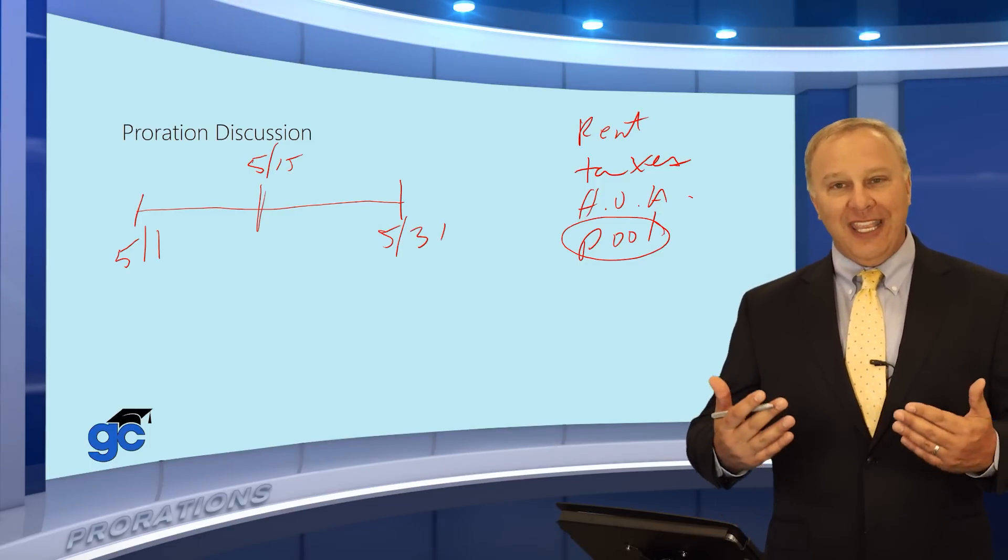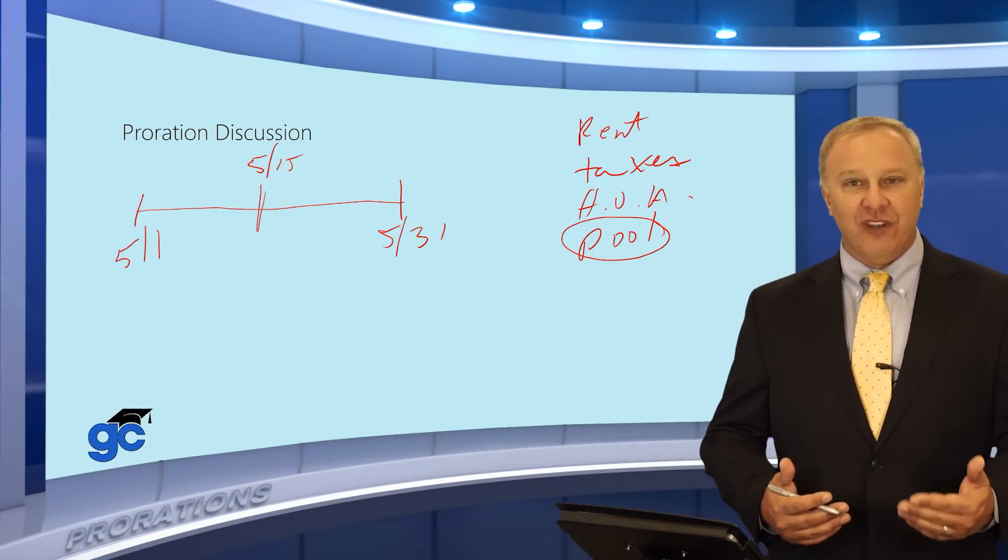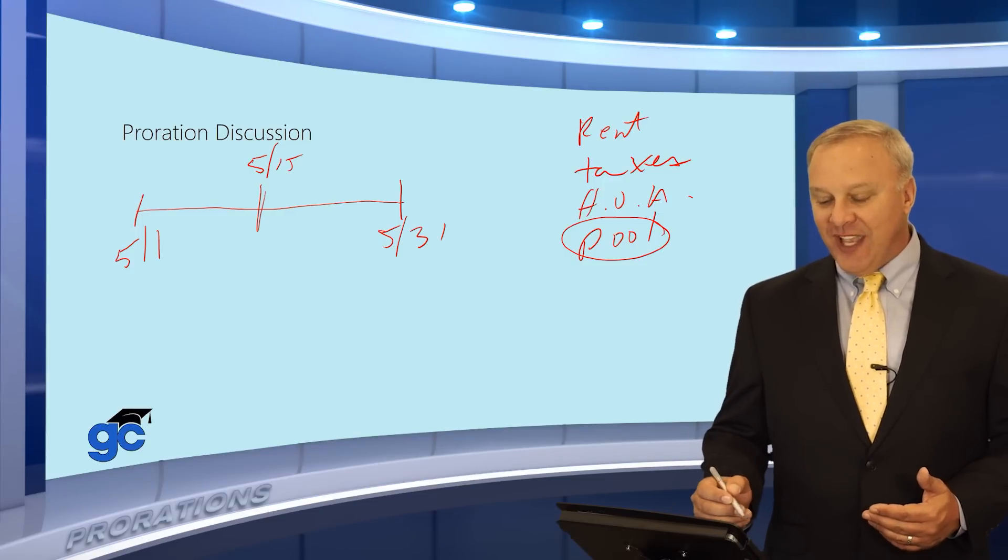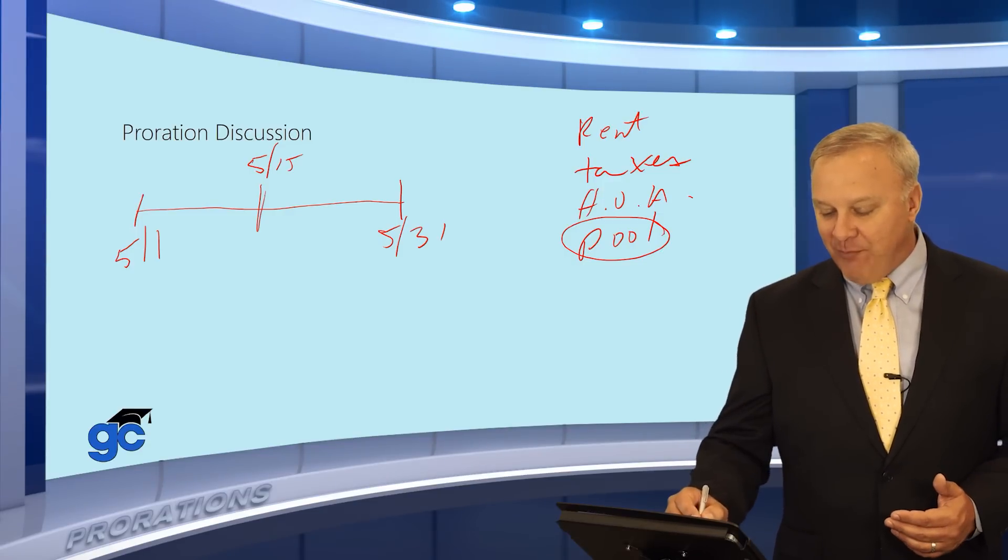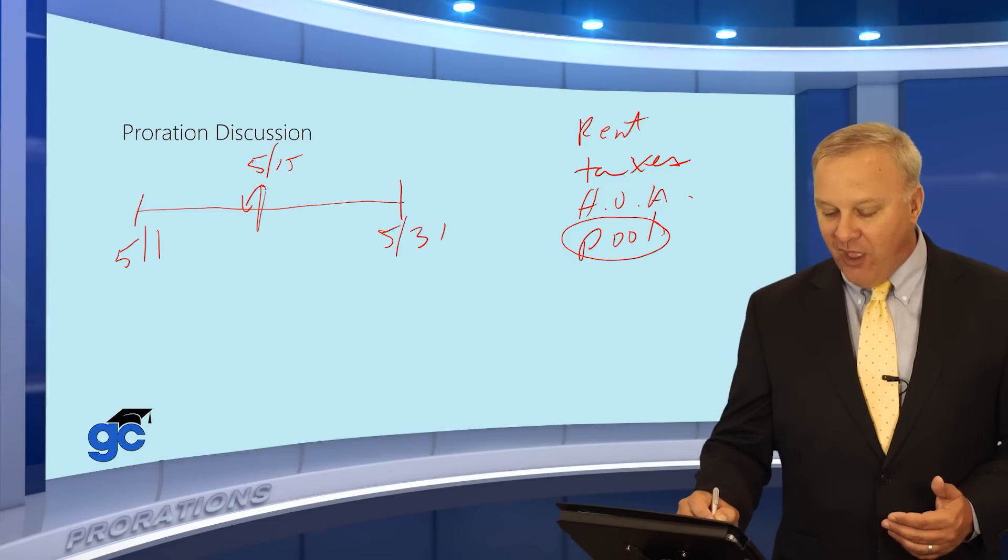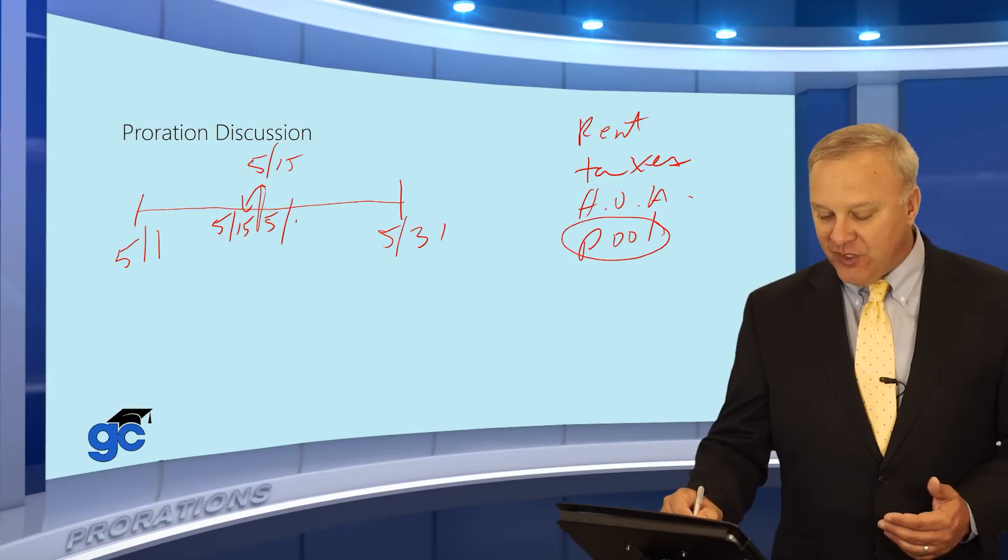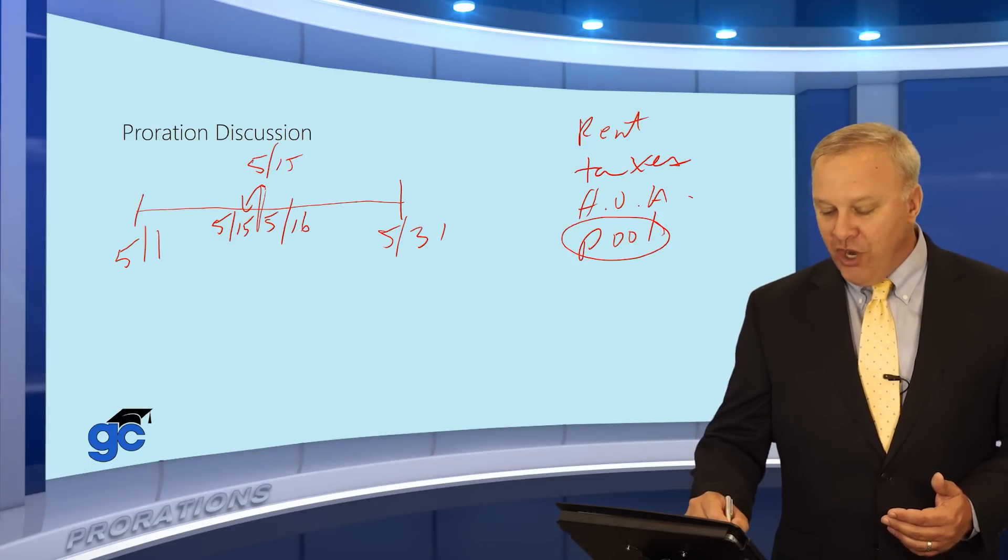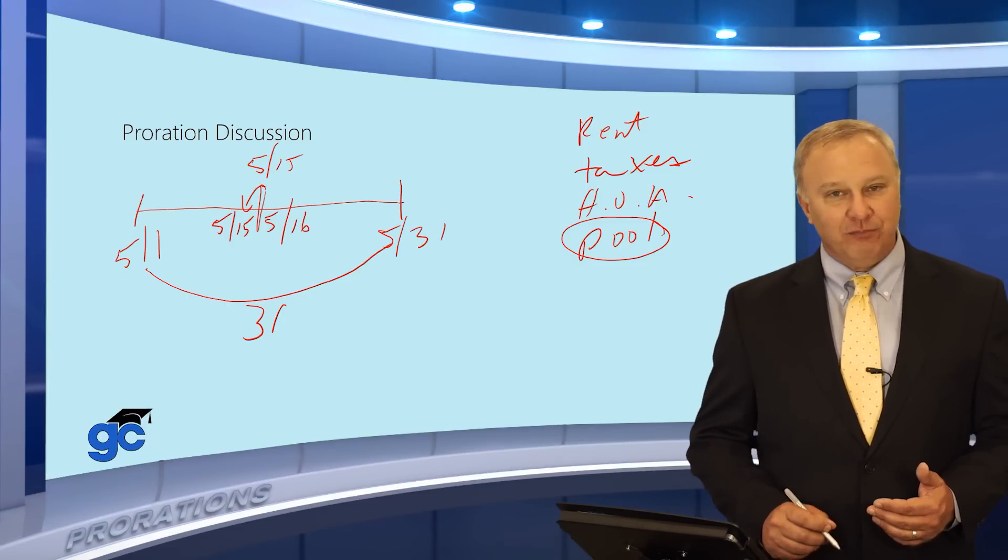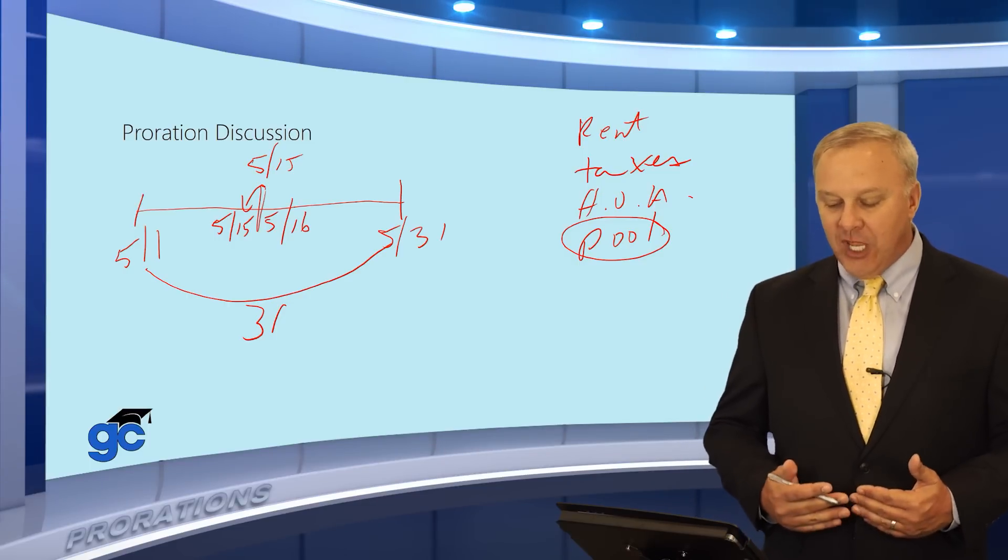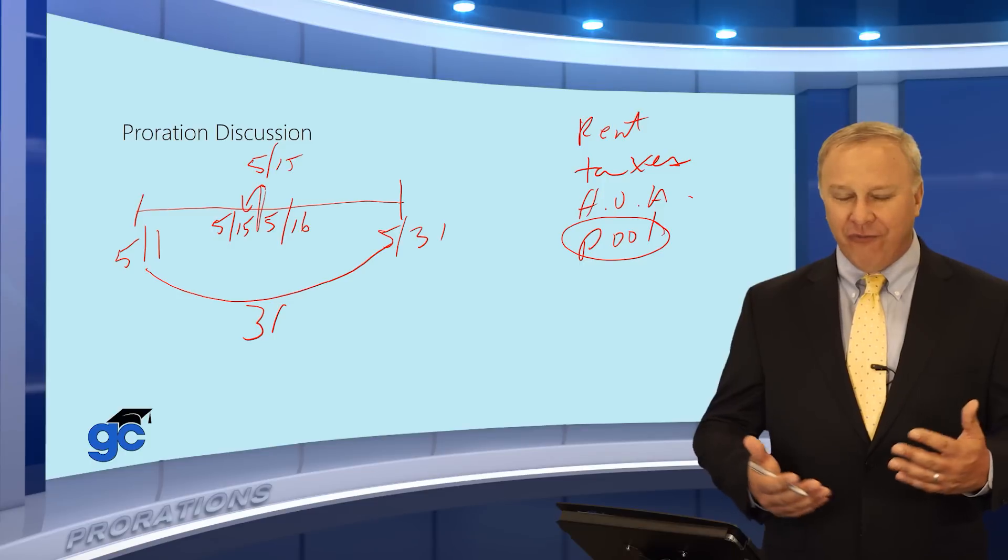Typically with a proration, the question will tell you who gets charged for or credited for the day of closing. In this case, let's say that the day of closing belongs to the seller. What that means is May 15th will fall on the seller's side, which means May 16th will be the first day for the buyer. We know in this month, the month of May, that there are a total of 31 days.